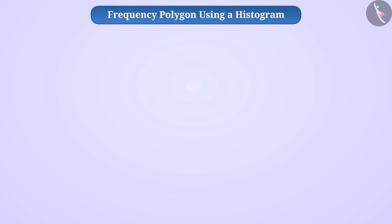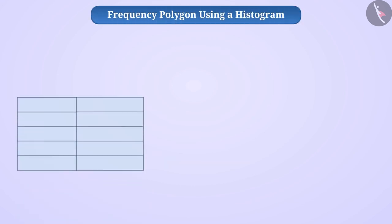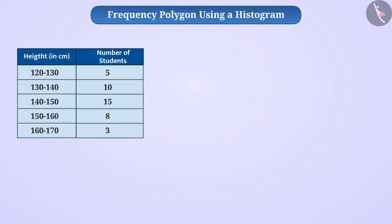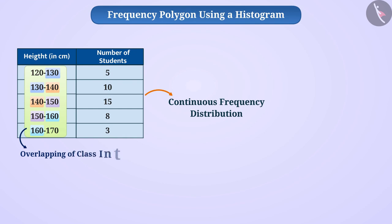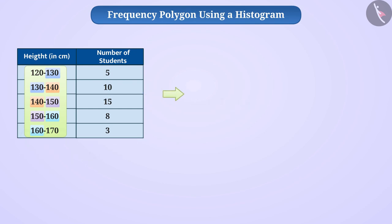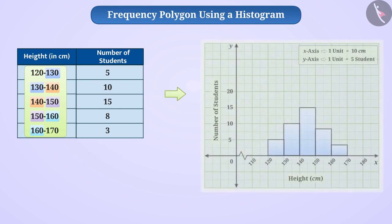Suppose the heights of students of class 9 in a school are presented in a frequency distribution table. This distribution is a continuous frequency distribution because there is overlapping of class intervals. From the frequency distribution table, we can draw a histogram like this.